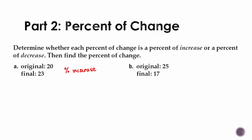In order to find the percent change, we have to find the difference between these two. Final minus original, and then we're going to divide that by the original. So it changed $3, and since our original was 20, we're going to do 3 divided by 20.